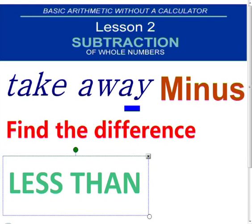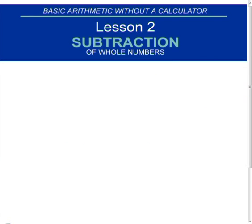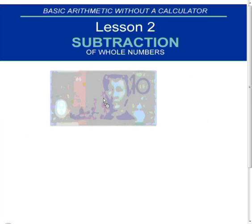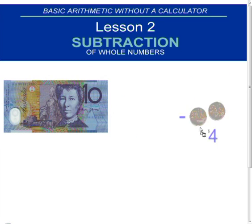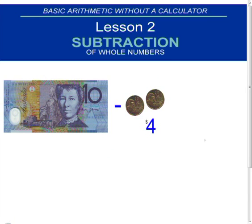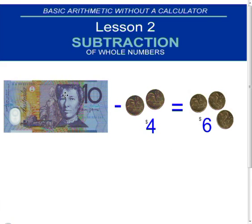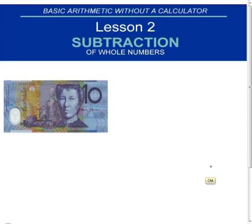Let's demonstrate in terms that we all understand, and that is money. If I went to the shops with $10 and I spent four of it, that is a subtraction example. $10 minus $4, and I would have $6 left after that. So, $10 minus $4 equals $6. And that's basically what subtraction is about.